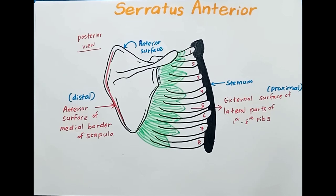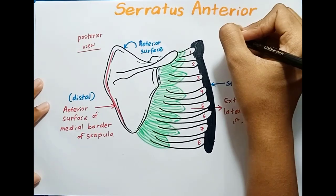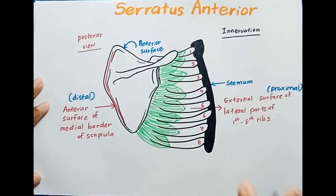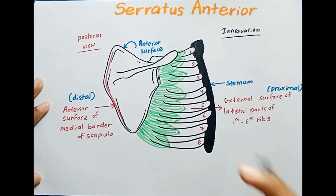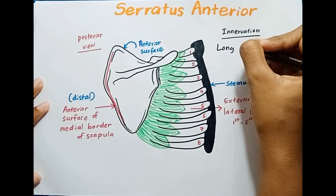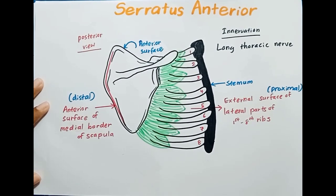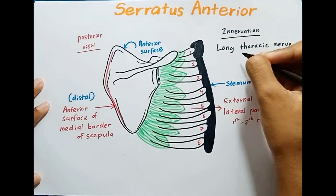Now let's talk about the innervation of the serratus anterior muscle. This muscle gets innervated by the long thoracic nerve, with nerve roots typically at C5 to C7.